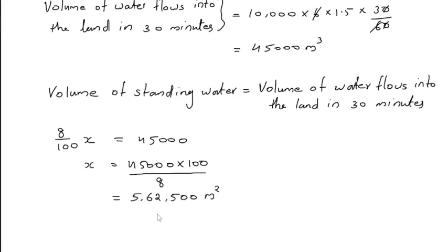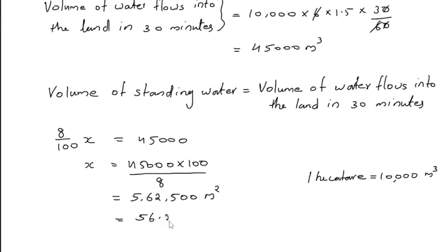x is the area of the land, so the unit is square meters. To convert into hectares, divide by 10,000, because one hectare equals 10,000 square meters. So we get 56.25 hectares. Therefore, the area to be irrigated is 562,500 square meters or 56.25 hectares.